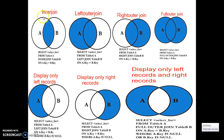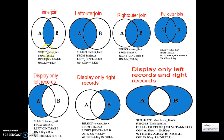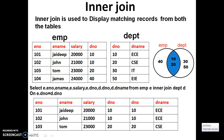Let us consider there are two tables. One is the left table and this is the right table. A is the left table and B is the right table in all the scenarios. Inner join is generally used to retrieve the matching records from both the tables — matching records means intersection.